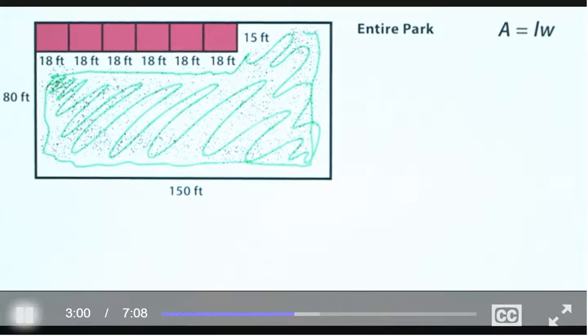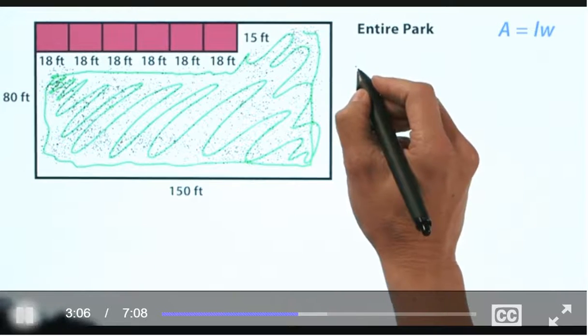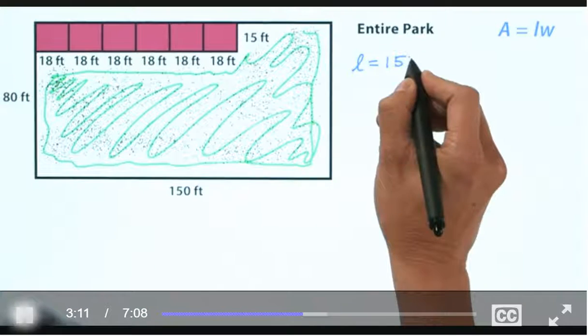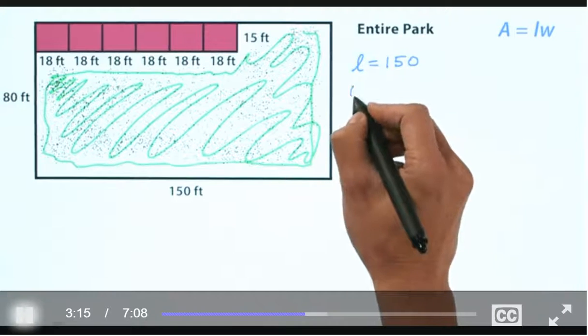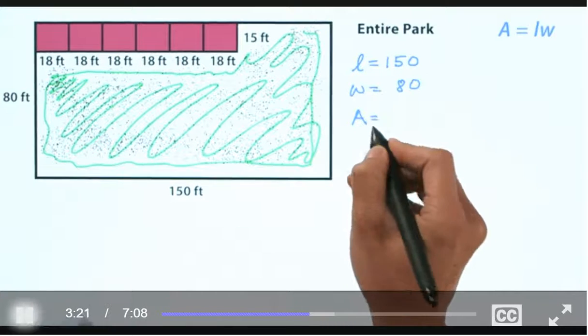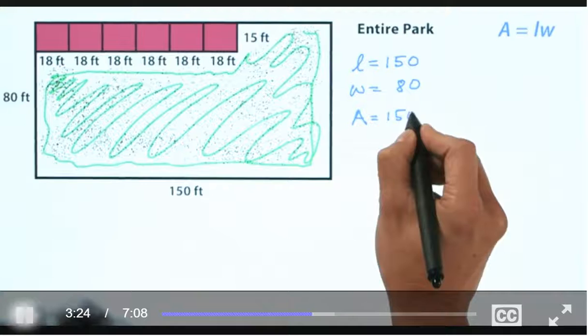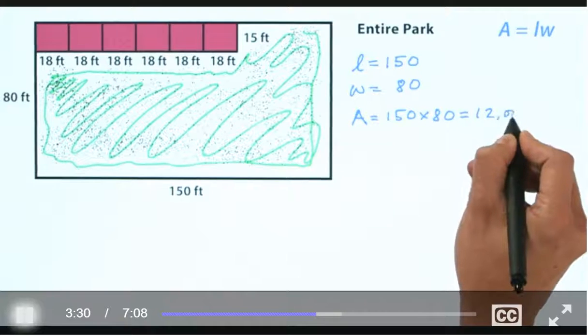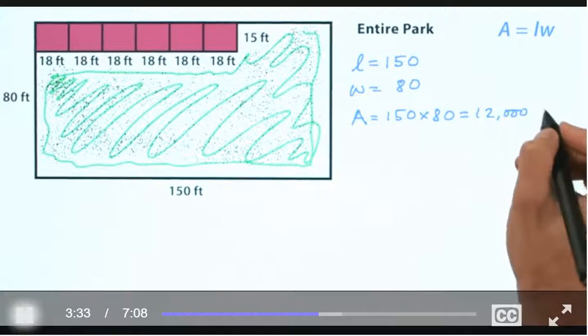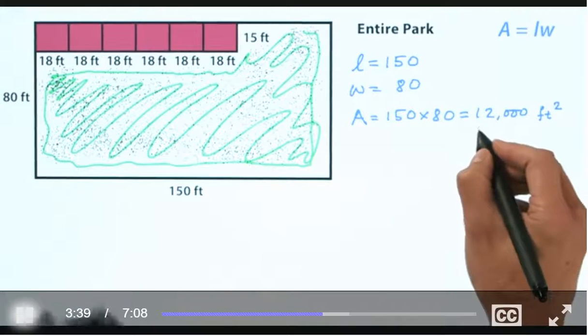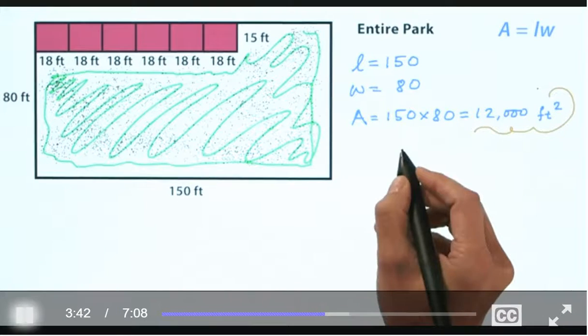So let's take a look and see if we can figure this out for ourselves. So the length is going to be 150 feet. I'm not going to write the units right now. And then the width is going to be 80. And so the area for the entire park is going to be 150 times 80. And if you multiply that out, you see 12,000. And now I'll put in the units, it's 12,000 square feet. Or I'll write them as feet squared. Okay, so that is the area of the entire park.